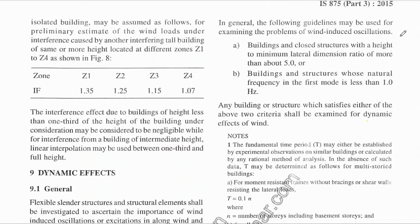These are the two conditions on which we decide that a structure is a rigid structure or a dynamically wind sensitive structure. The first condition is: a building or closed structure with a height to minimum lateral dimension ratio greater than 5, and a building or structure whose natural frequency in the first mode is less than 1 Hz.